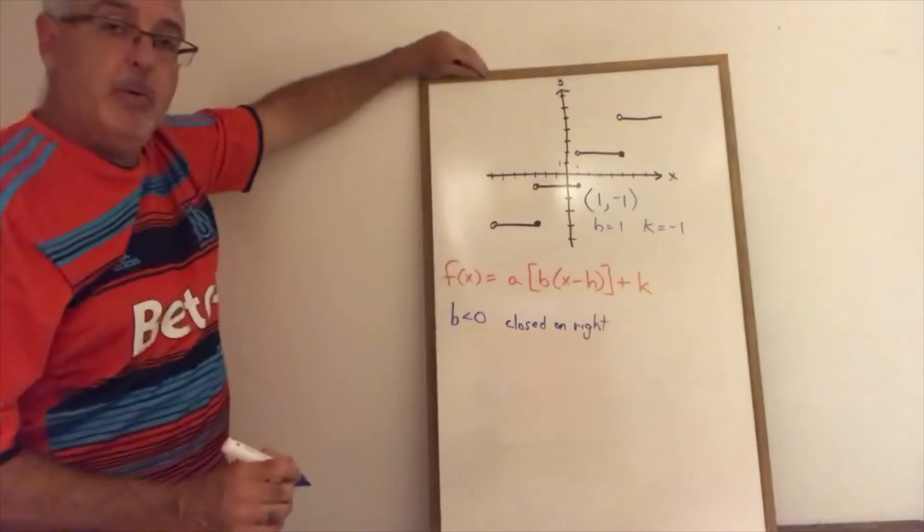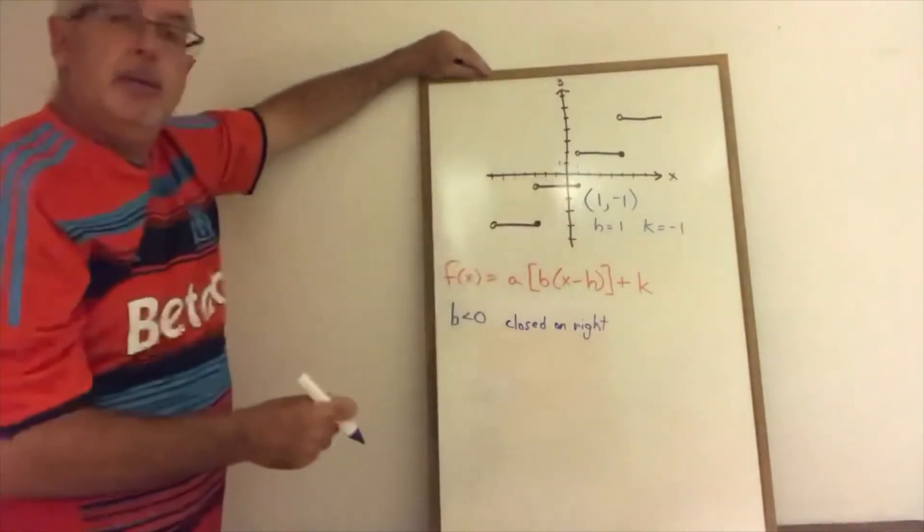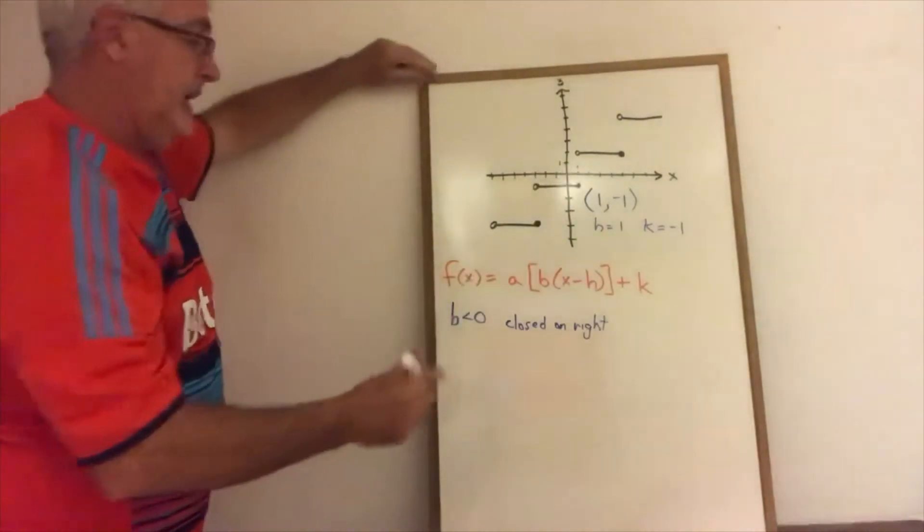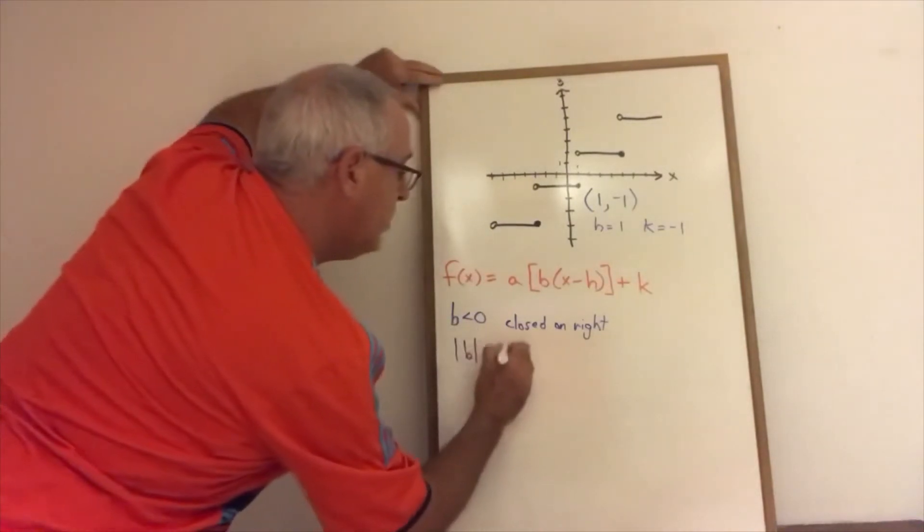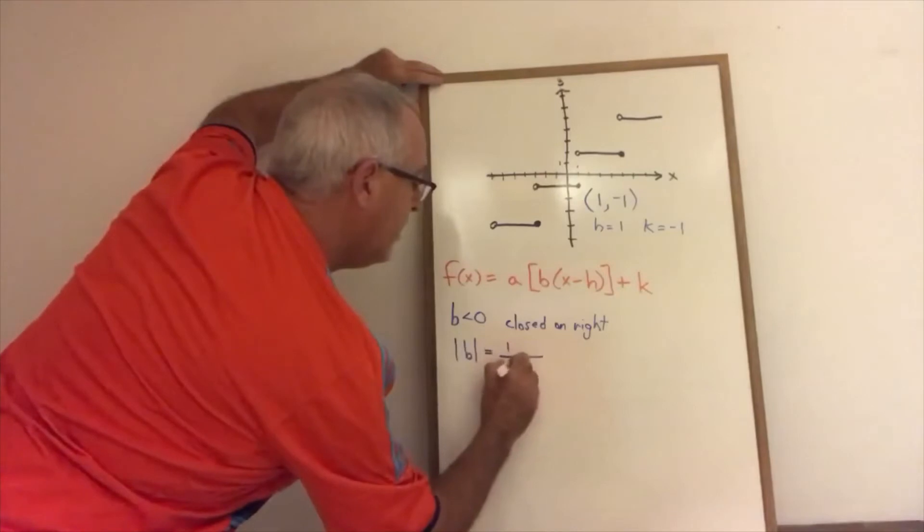But I'm not finished with b because the length of the steps helps me find the size of b. We have to know that the absolute value of b is equal to 1 over the length of the steps.